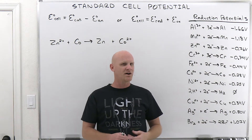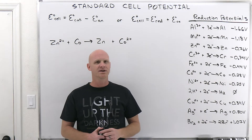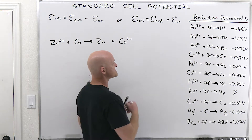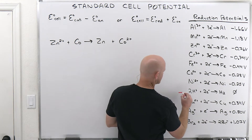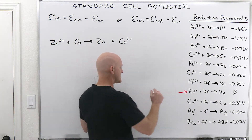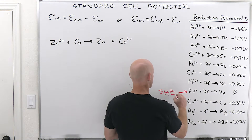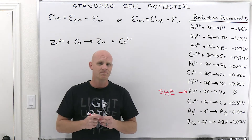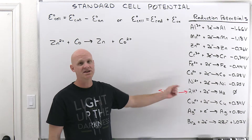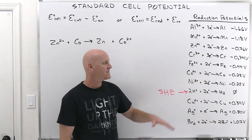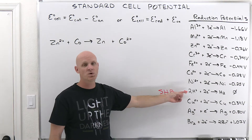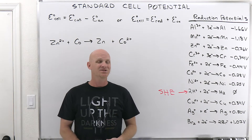Voltage values are all relative, which gets a little tricky. How can we have this table if everything's relative? Well, they took this reaction — 2H⁺ + 2e⁻ → H₂ — the standard hydrogen electrode, the SHE, and arbitrarily assigned it a value of zero. Every other value in the table is measured relative to that zero assignment.